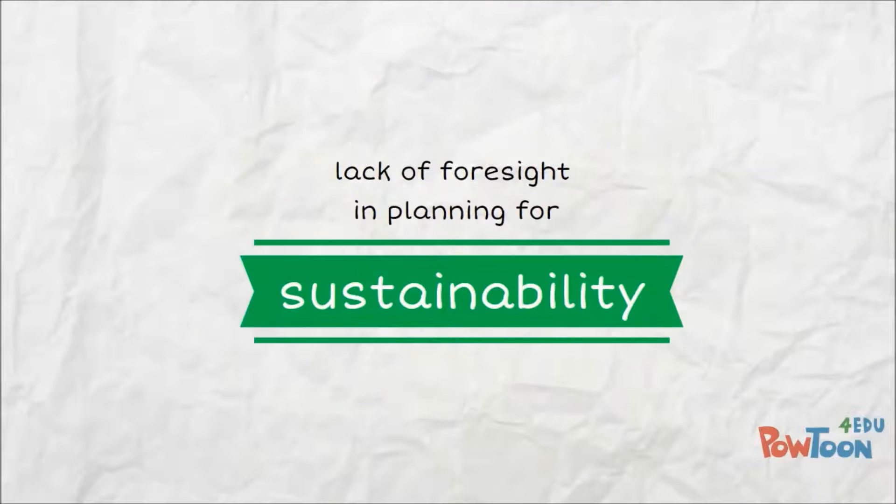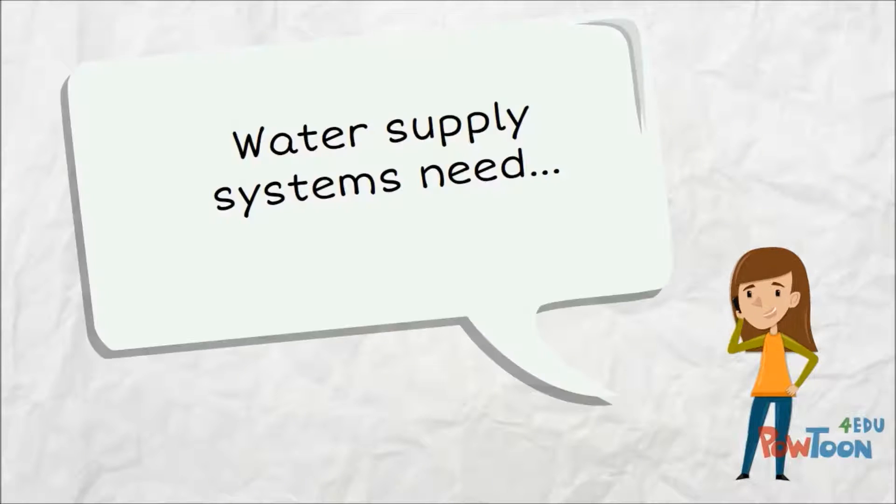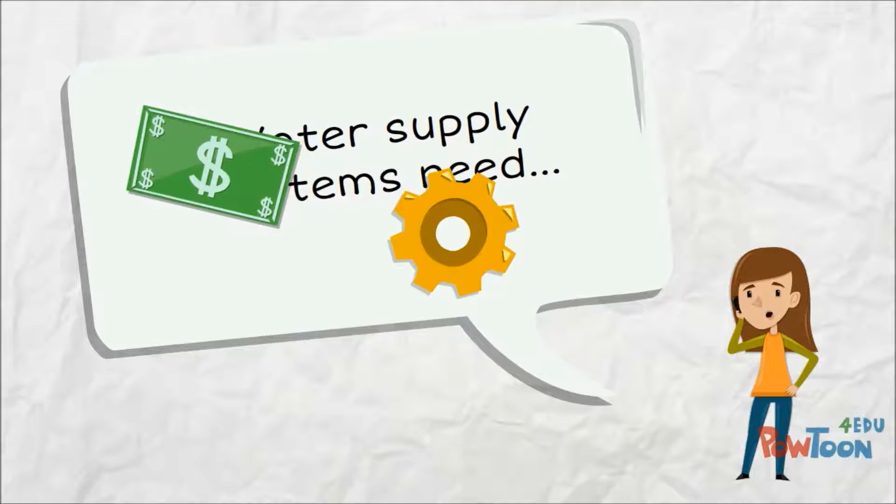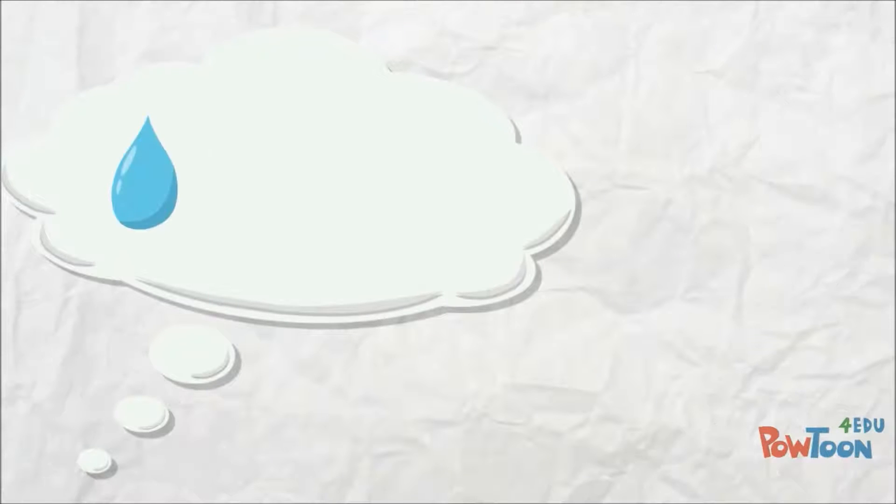It's estimated that up to 40% of water projects fail due to a lack of foresight in planning for sustainability. Like any other engineered system, water supply systems need technical, financial, administrative, and governmental support, aspects which are often overlooked when water systems are implemented in rural areas.